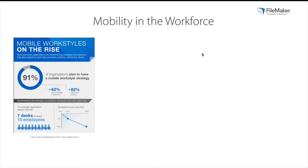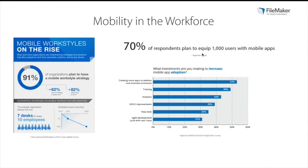Mobile solutions are integral to a mobile strategy. A CIO article pointed to one Hyperion survey noting that 70% of respondents plan to equip 1,000 users with mobile apps, and a third of those had plans to deploy 5,000 mobile users by 2016. Businesses aren't just looking for any downloadable app that may or may not fit their needs — Hyperion's mobile enterprise application survey found that the leading strategy for mobile adoption by IT leaders is creating their own apps to address core business problems.